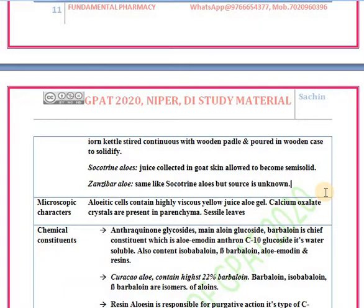Gingiber aloe is prepared similarly to Socotrine aloe or Cape aloe, but the source of the aloe is unknown. These are the different types of prepared aloe.